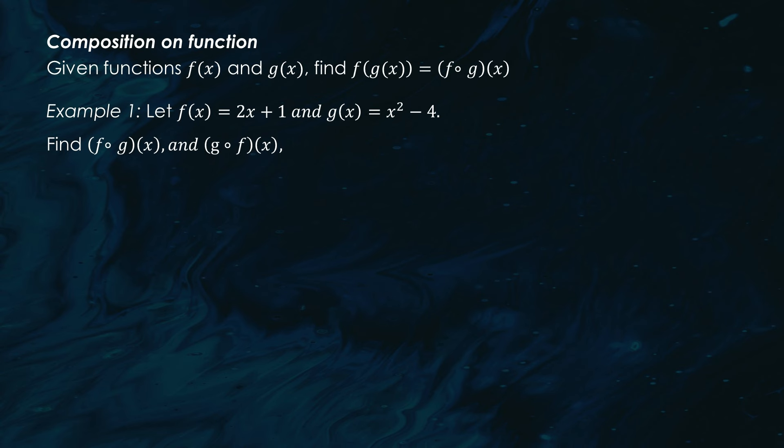Let's move on to something a bit more advanced: composition of functions. This is where we apply one function to the result of another. If you have two functions f(x) and g(x), the composition is written as f ∘ g of x, which means f(g(x)).